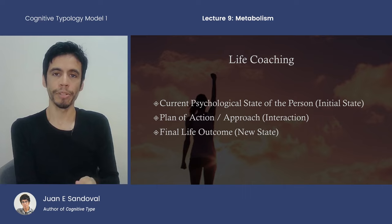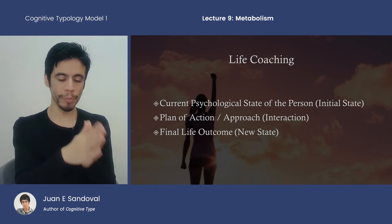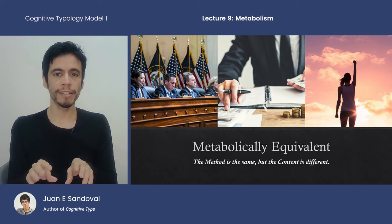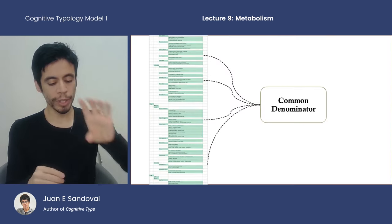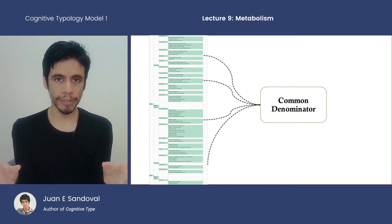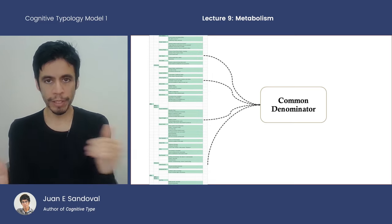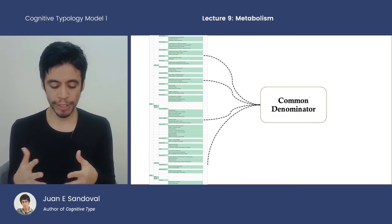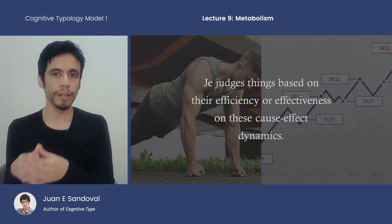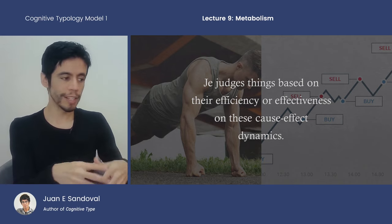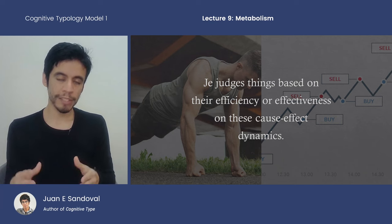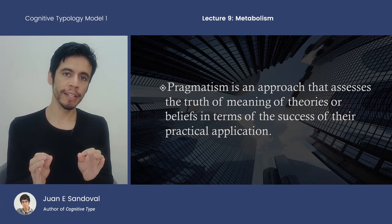JE has a natural understanding of input-output, cause-and-effect interactions. Metabolically speaking, these three situations are equivalent — the method is the same but the content is different. That's how we extract a metabolic essence from behavioral profiles. This causal understanding is also what leads JE to judge things based on their efficiency and effectiveness within cause-and-effect dynamics. If it doesn't work, it's devalued; if it works, it's valued. This leads to the JE lead alias of pragmatism — the philosophical position that assesses the truth of theories or beliefs in terms of the success of their practical applications. Something is true if it works. This is the opposite of reasoning by principle, where something might be seen as true in principle even if it fails in practice.